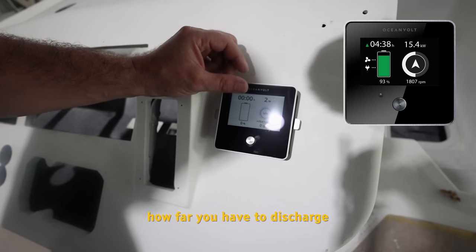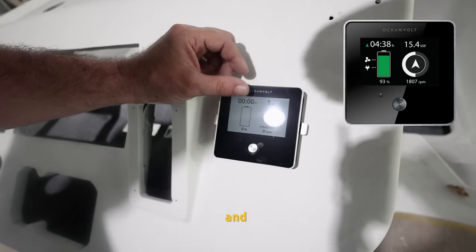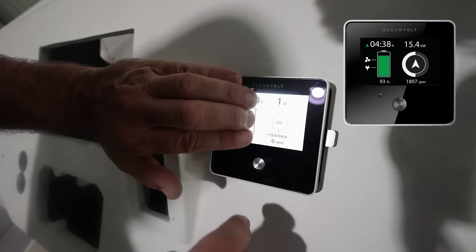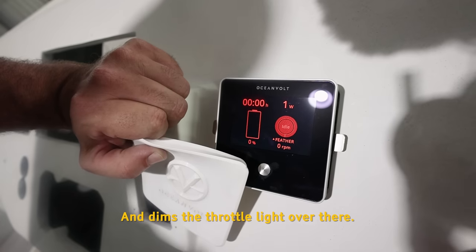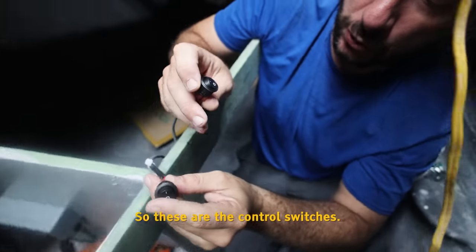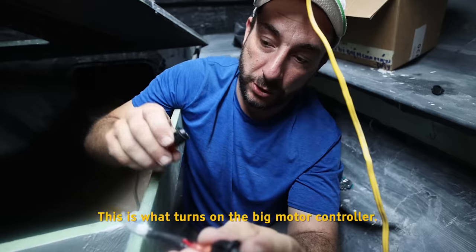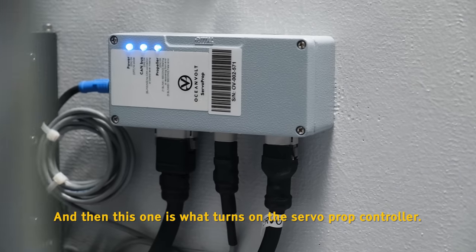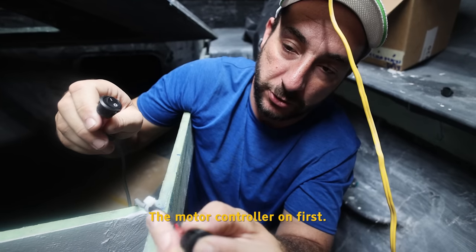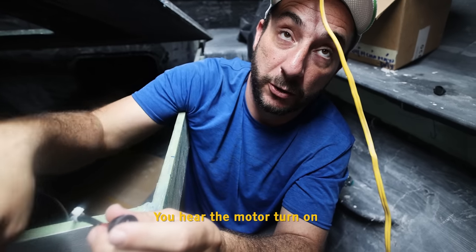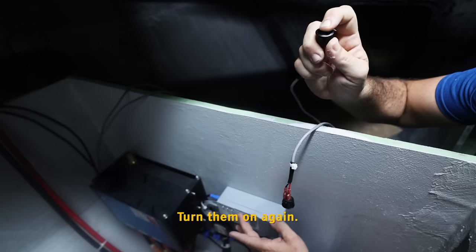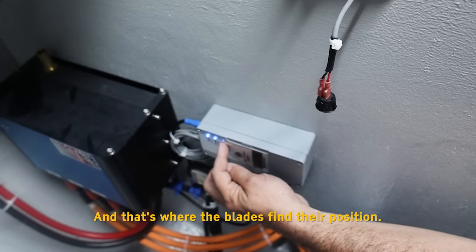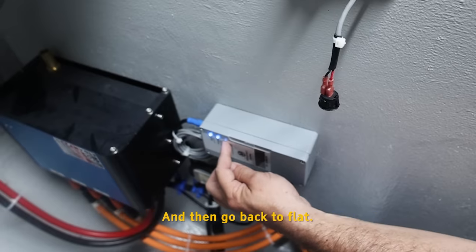This countdown clock up here will tell you how far you have to discharge and how far you have to recharge. And then on this side is all the motor data. And then if we hit it once, it goes into night mode and dims the throttle light over here. So these are the control switches. This is what turns on the big motor controller. And then this one is what turns on the servo prop controller. Motor controller on first, servo on. You hear the motor turn on and then you'll hear it hone. Turn them on again every time you reset it. So it turns on, it communicates, and then it hones. And that's where the blades find their position and then go back to flat.